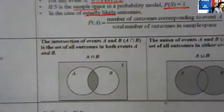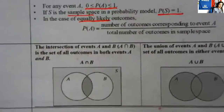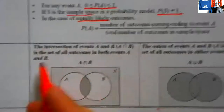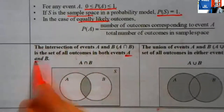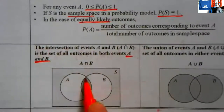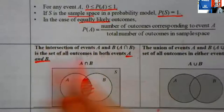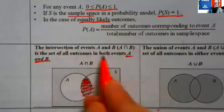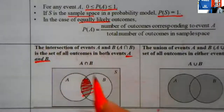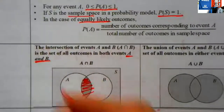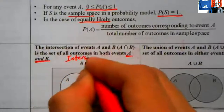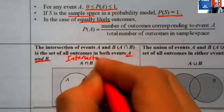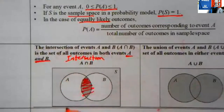The intersection is the set of A and B — that's the area they have in common. Intersection is what they have in common.